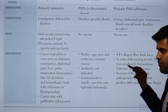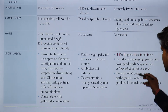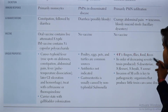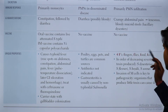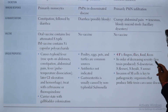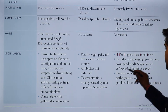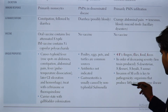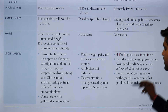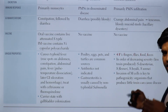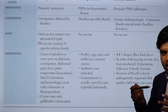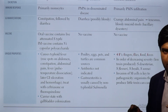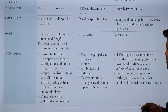Shigella can be transmitted via the four F's: fingers, flies, food, and feces (fecal-oral contamination). In order of decreasing severity and toxin production, the four species are: Shigella dysenteriae, Shigella flexneri, Shigella boydii, and Shigella sonnei. Invasion of M cells is key to pathogenicity. Shigella spreads from one cell to another by actin polymerization, evading humoral antibody-mediated killing.